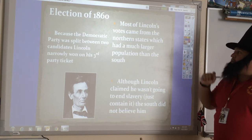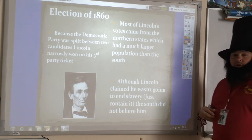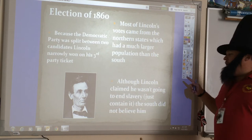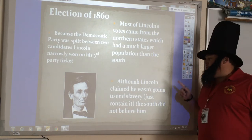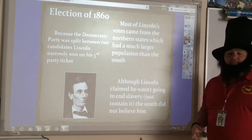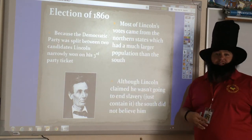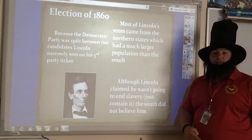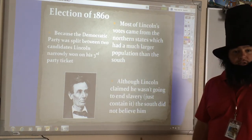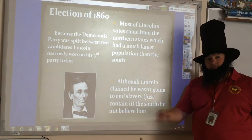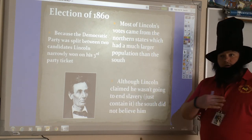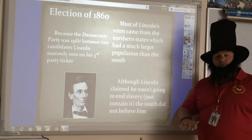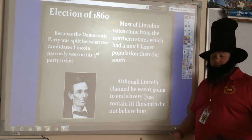The Democratic Party was now split between two candidates. Because the big party at the time was split, it allowed for Lincoln, this third-party candidate, to actually win the election. Lincoln won every state from the North, which had a much larger population than the South. Although Lincoln claimed he wasn't going to end slavery, just contain it, the South basically didn't believe him. So they were afraid that now they're going to be outvoted in every presidential election and the president will always come from the North.